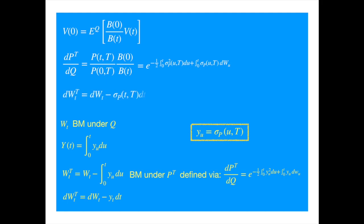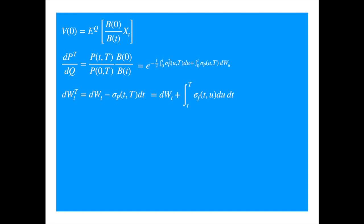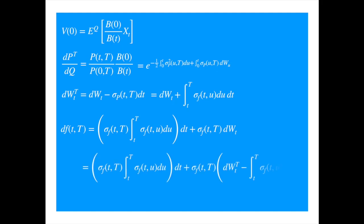We just need to subtract sigma_P. We saw earlier that sigma_P is just the integral of sigma_F, so we can make this substitution. Reproducing the dynamics under the risk neutral measure and substituting for the old Brownian, the two integrals cancel each other and we are left with only the stochastic term, meaning the instantaneous forward is a martingale under the T forward measure. This is quite handy: if you model an instantaneous forward of maturity capital T using the zero coupon of the same maturity as the numeraire, you get a martingale and can apply martingale theory directly.